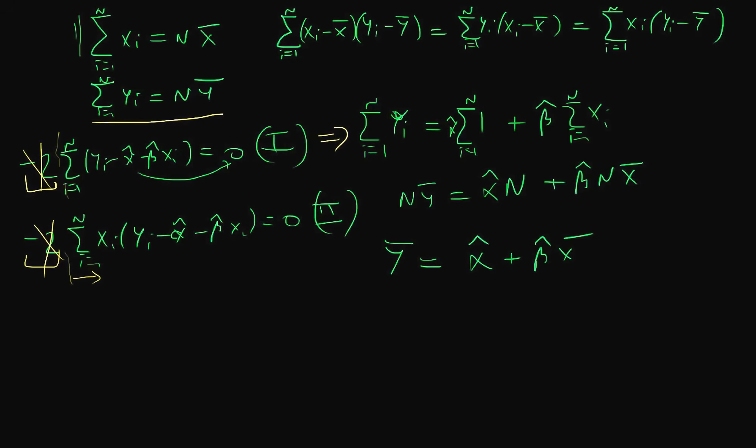This looks similar to our regression line which we were trying to derive. Our fitted values of y, or predicted values y hat, equals alpha hat plus beta hat times xi.